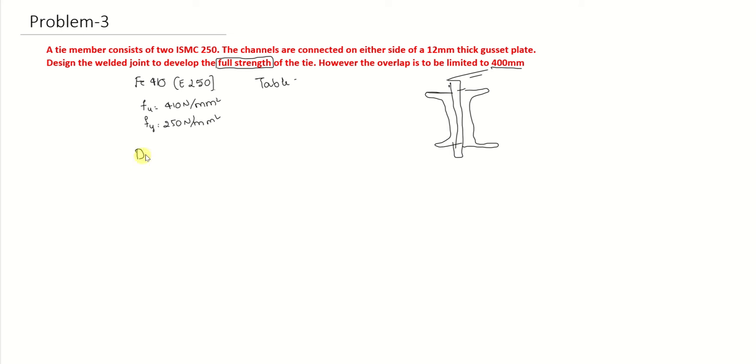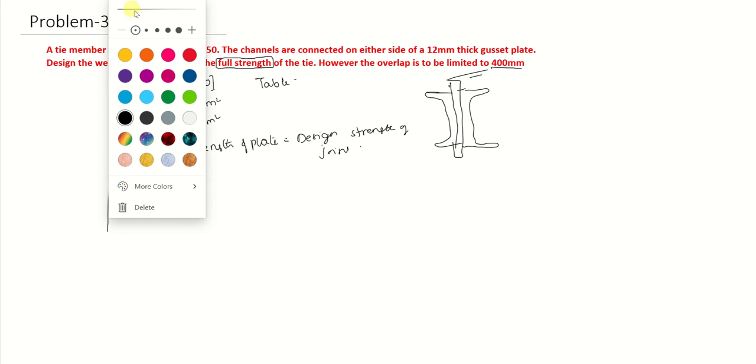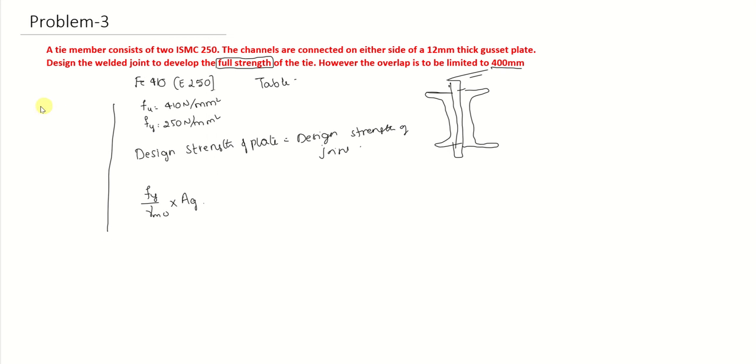When we have to develop the full strength of the tie member, the design strength of the plate should be equal to the design strength of the joint. The design strength of the plate is FY by gamma M0 into AG. AG is the gross area.